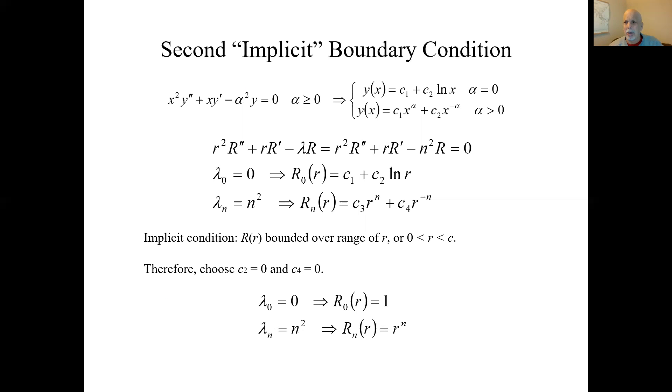The other implicit boundary condition was boundedness. We don't let our solution go off to infinity over the range of the variable. In this case, the range of the variable is the R variable, and it goes from 0 to some finite value, the radius of the plate. So zero is the troublesome part.